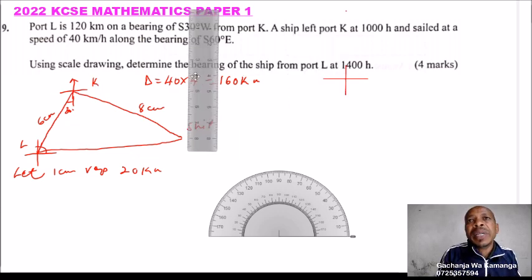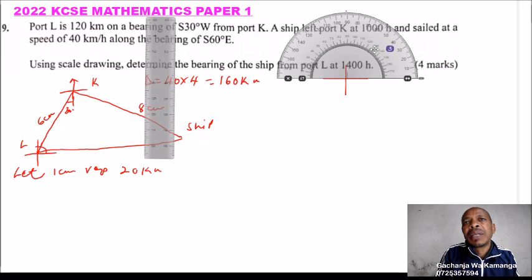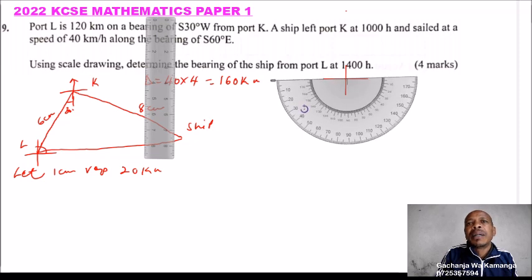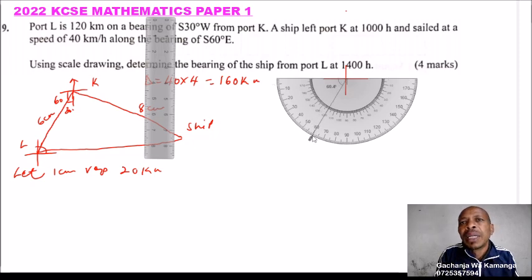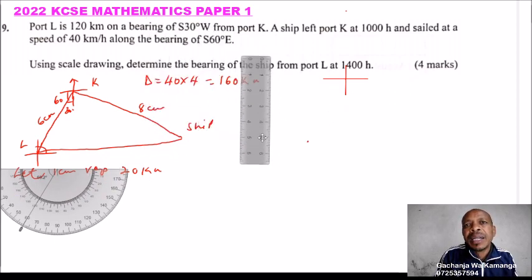From K, we need to place port L. The bearing is S30°W, which means this angle from south toward west is 30 degrees, so the angle from the south axis measured on the west side is 30 degrees — equivalently, we measure 60 degrees from the north-south line. We place our protractor and mark that angle, then draw that line toward L.